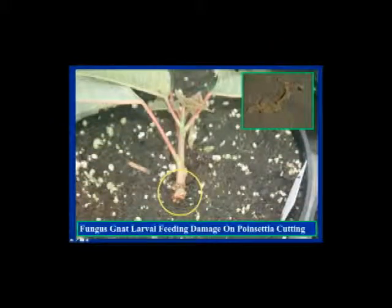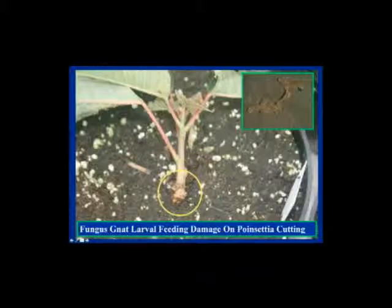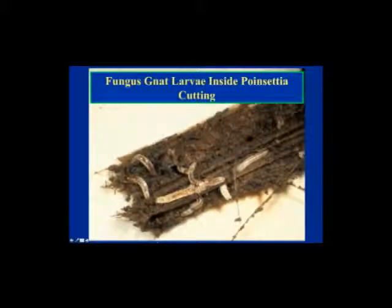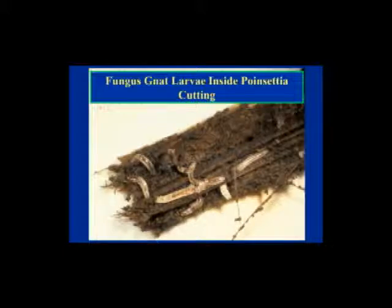Here's an example of what fungus gnat larvae can do to a cutting. They are really prevalent under moist conditions, and they can chew on the roots or the callous areas and actually enter a cutting. This image shows a poinsettia cutting where fungus gnats bored into it — there were about 10 to 15 larvae inside. As you can tell, this cutting was pretty much history and had to be disposed of.